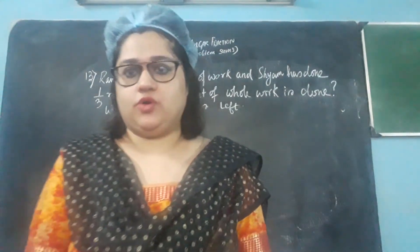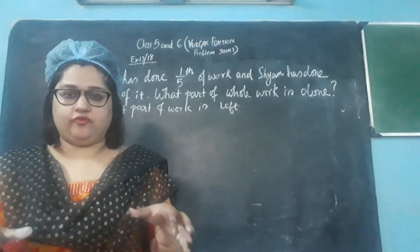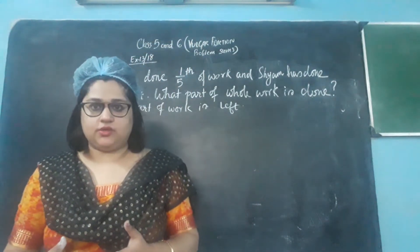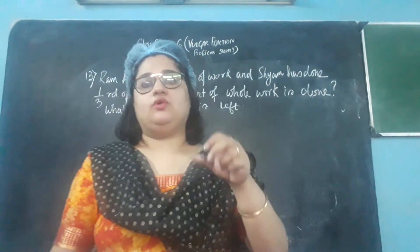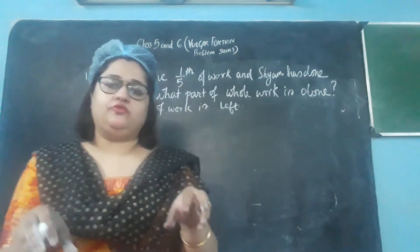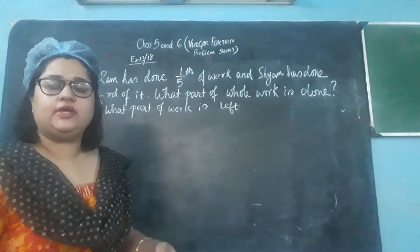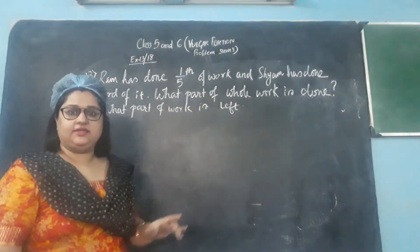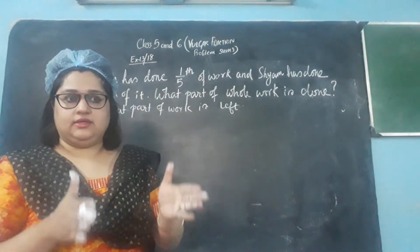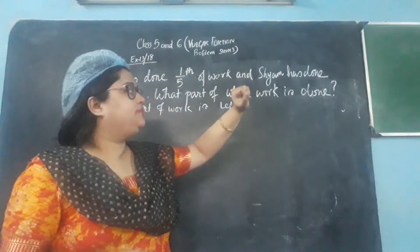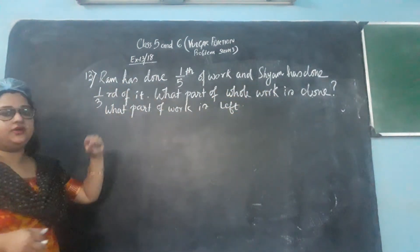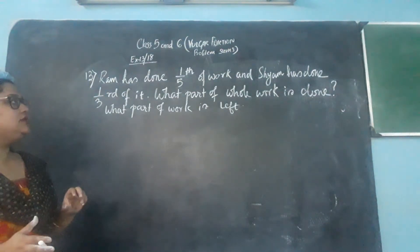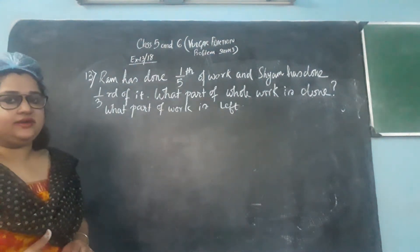Suppose your teacher has given some work and you are not doing it alone — you are doing it with a friend. In case of projects or chart papers, you do not do the entire work alone; you do it in a group. The entire work is divided between two friends. One friend is doing one-fifth of the work — if you divide the entire work into five equal parts, he is doing only one part. The other friend Shan is doing one-third, meaning if you divide the work into three pieces, he is doing one part of it. This is the distribution between the friends.